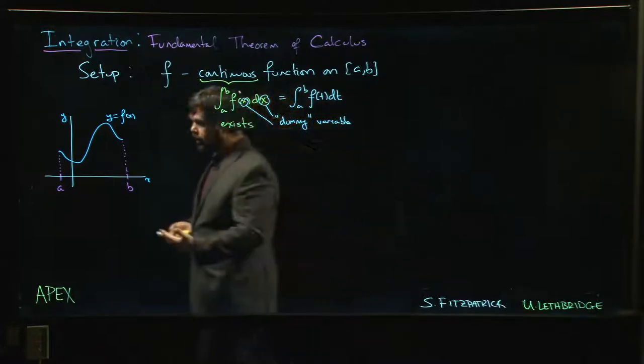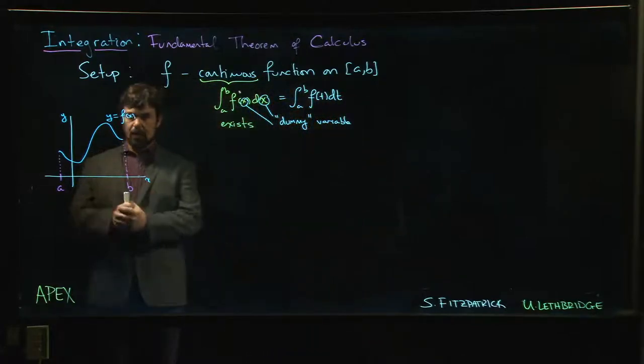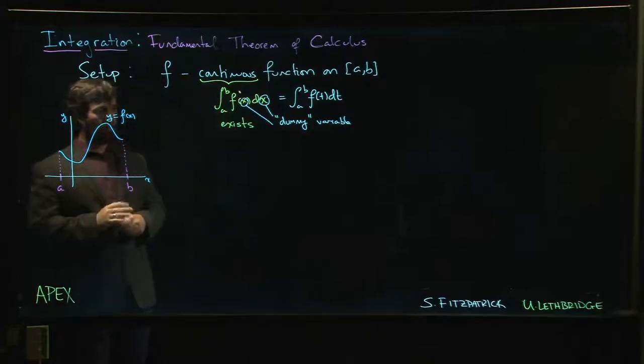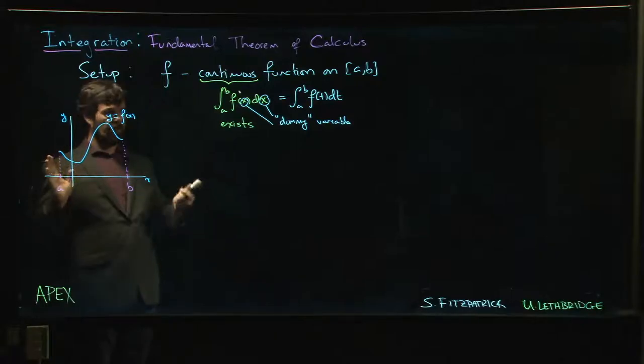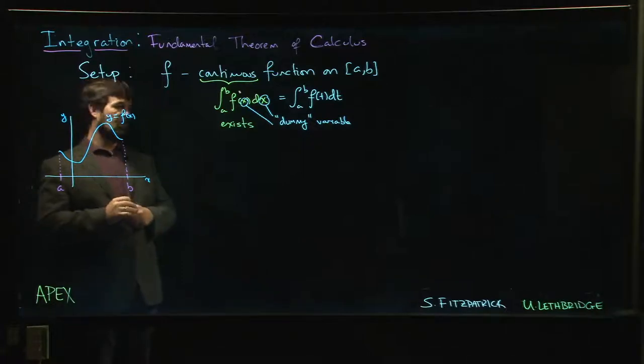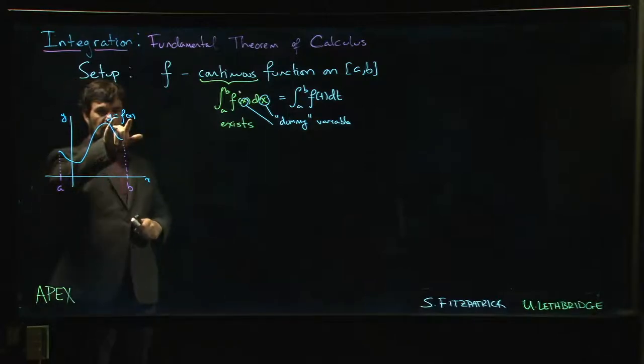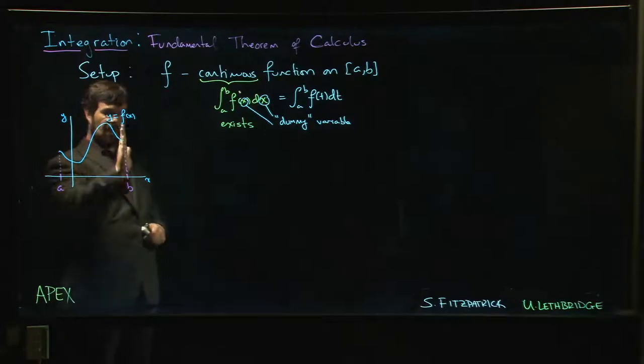So we have this as kind of our setup, and we think again about this area problem. So we've got this usual situation where we know that what this integral computes is - assuming that f is positive, of course, we know it doesn't have to be but if it is we can draw the picture - for positive function, this integral is computing this area under the curve. So it's the area under y equals f(x), starting at x equals a, ending at x equals b, bounded below by the x-axis.